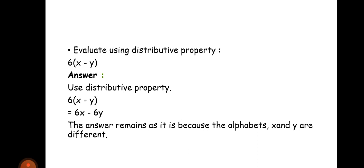6(x - y). Using the property we say 6 times x minus 6 times y. 6 times x is 6x, 6 times y is 6y. The answer remains as it is.